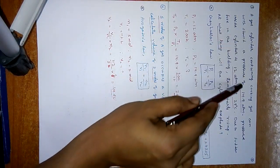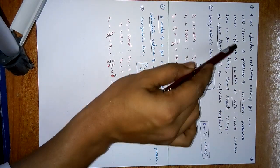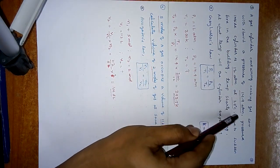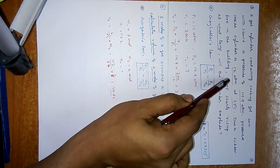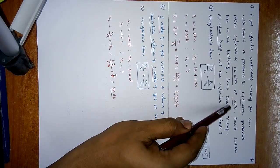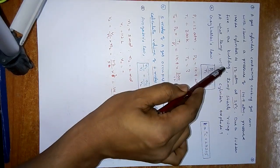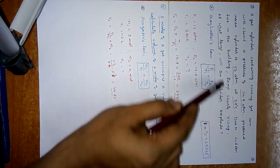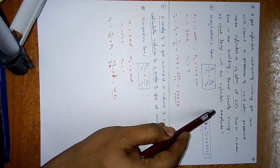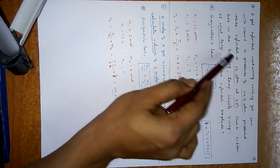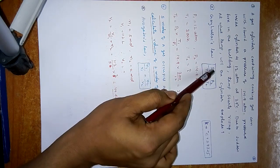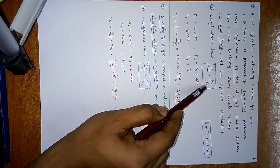A gas cylinder containing cooking gas can withstand a pressure of 14.9 atmospheres. Pressure inside the cylinder is 12 atmospheres at 27°C. Due to a sudden fire in the building, temperature starts rising. At what temperature will the cylinder explode? We solve this using Gay-Lussac's law: P1/T1 = P2/T2.